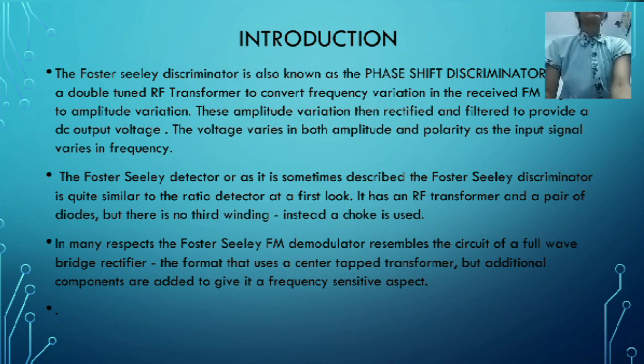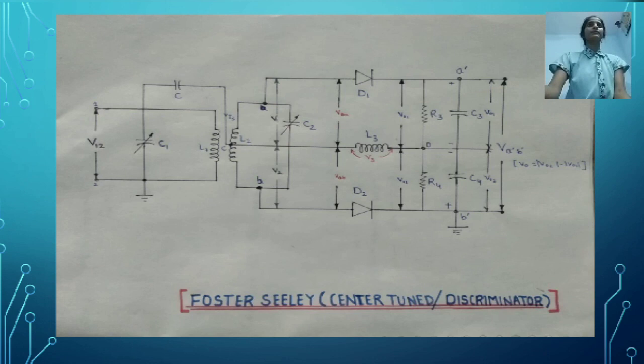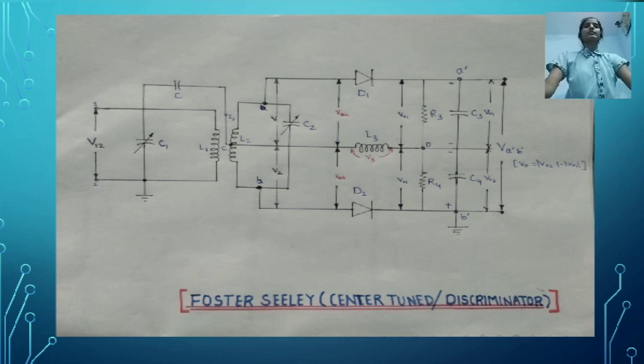Now we discuss the working of the phase discriminator. This is the circuit of the phase discriminator. In this circuit, L1 and C1 form the tuned circuit of the primary coil, and L2 and C2 form the tuned circuit of the secondary coil. As mentioned earlier, both circuits are tuned at the same resonant frequency — that is, the carrier frequency or central frequency, denoted as FC.